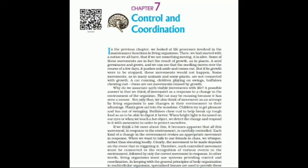An exocrine gland releases secretion through particular ducts, directly putting the secretion where it is needed, or the ducts carry the secretion to a particular organ. For example, the pancreas releases pancreatic juice directly into the small intestine.